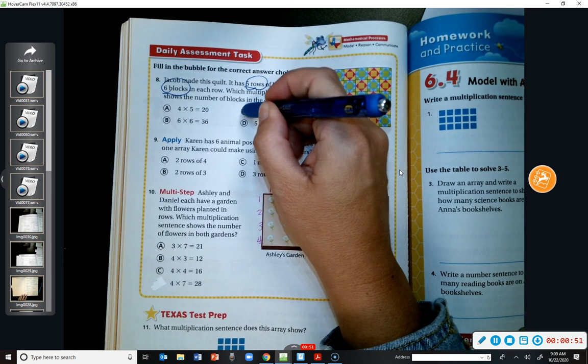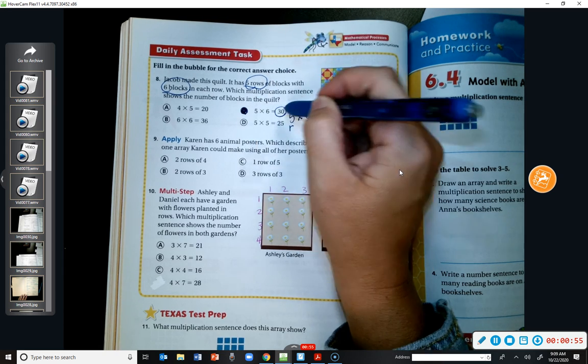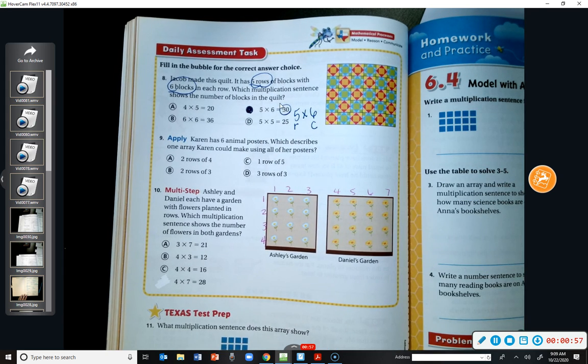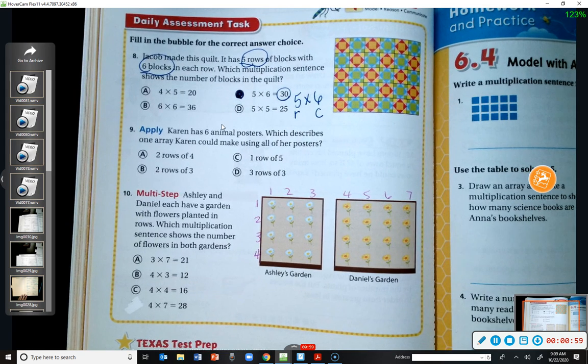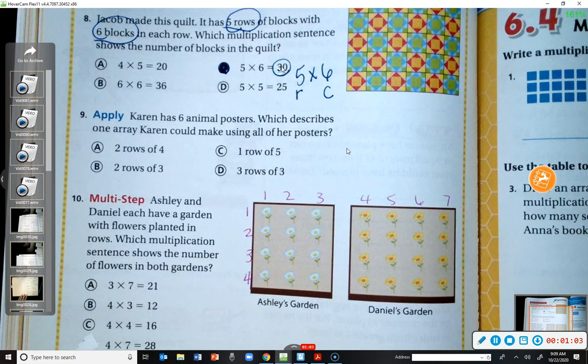So C is the only one that is correct. On these two, you also need to make sure they have the product correct. Because sometimes they will give you two multiplication sentences that look right, but then throw you off by not having the correct product.